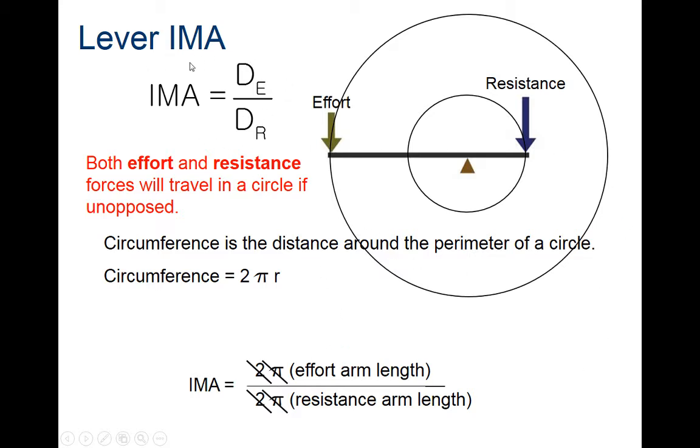we can calculate the mechanical advantage with this formula. The ideal mechanical advantage (IMA) is our effort distance divided by our resistance distance.